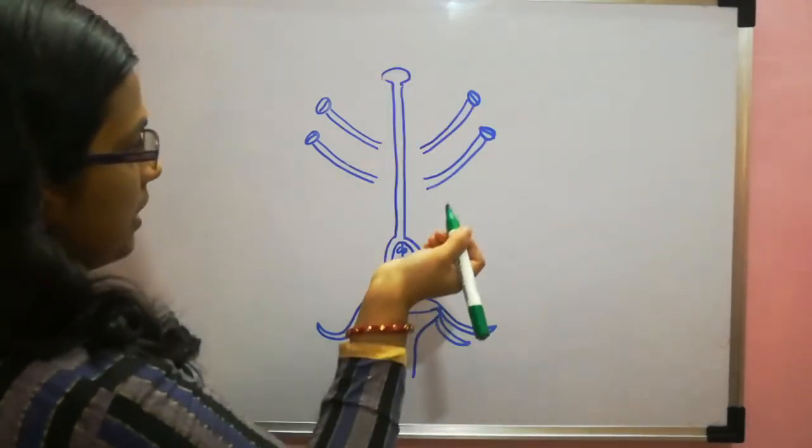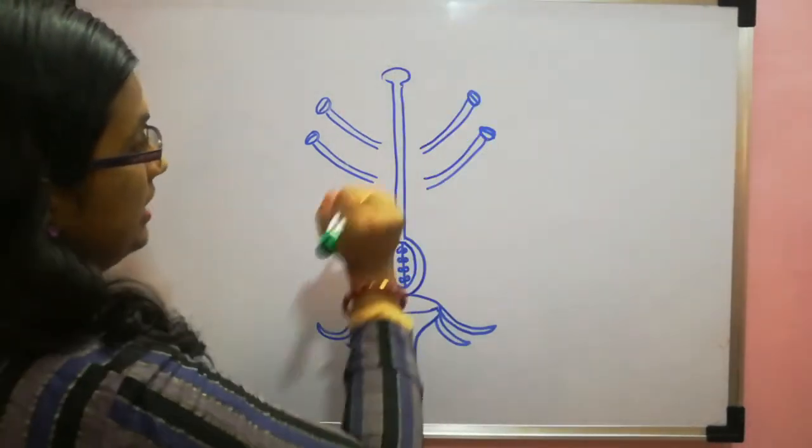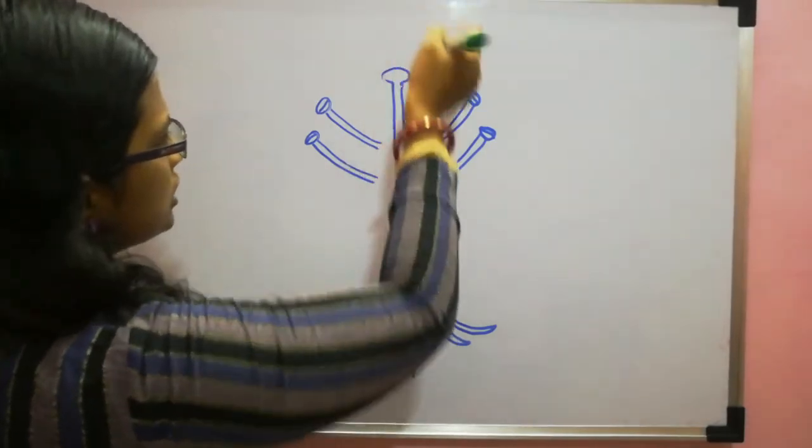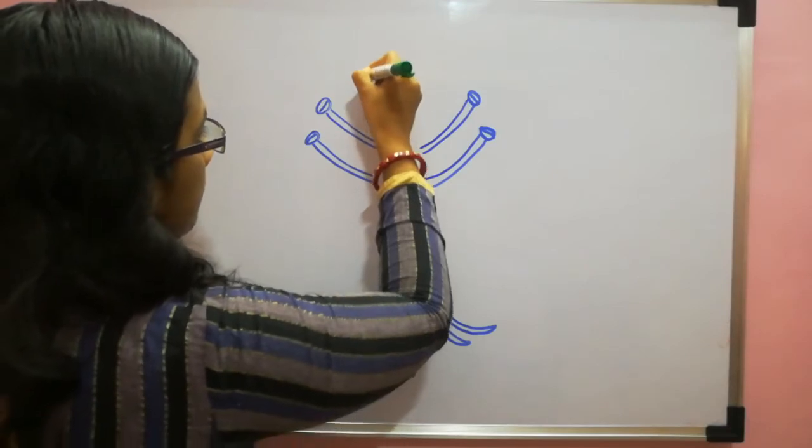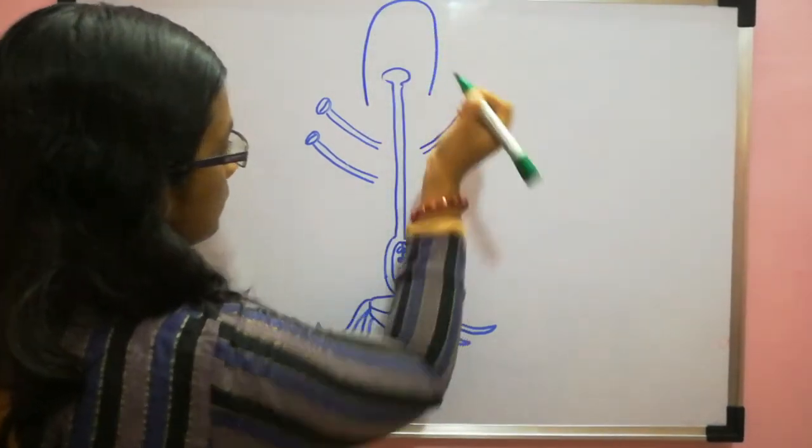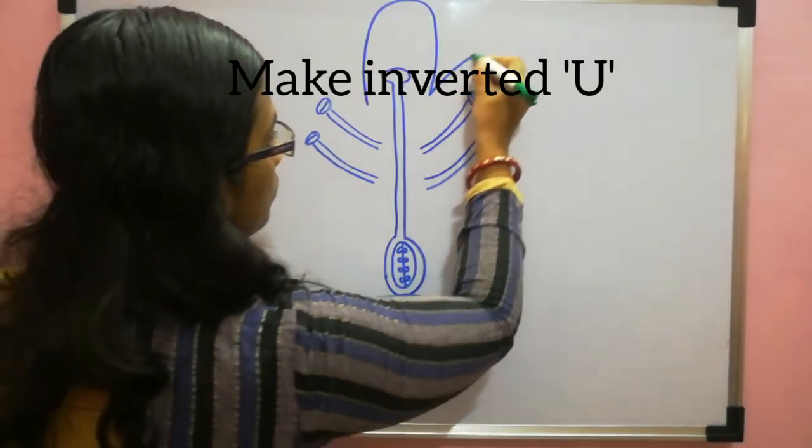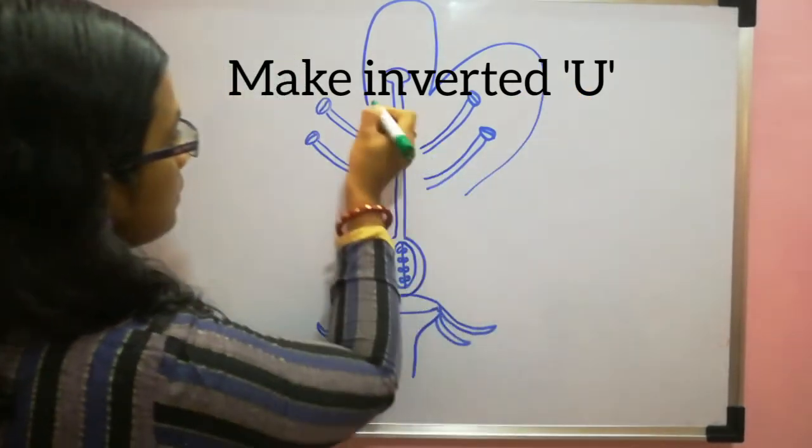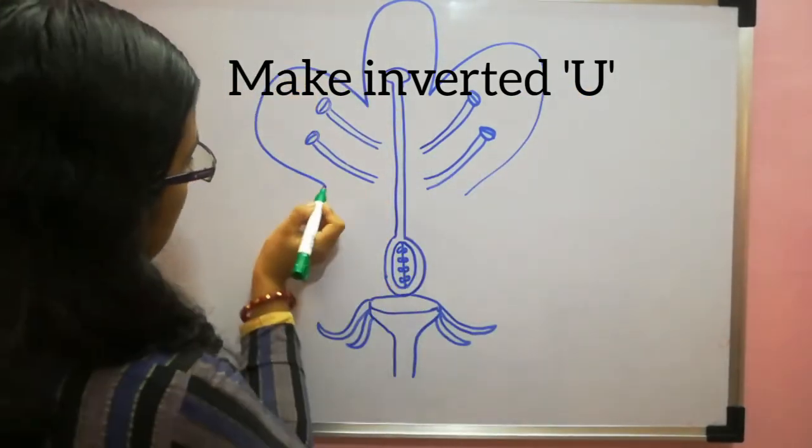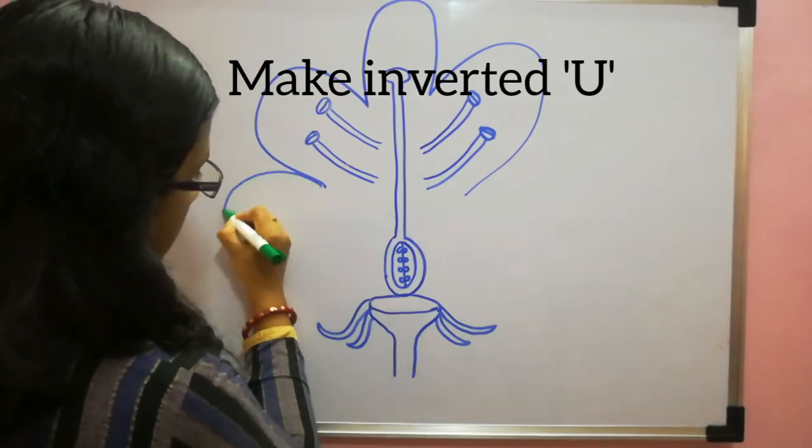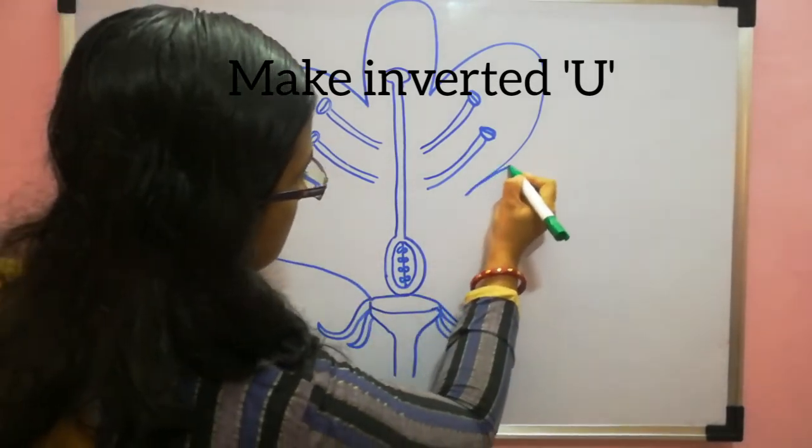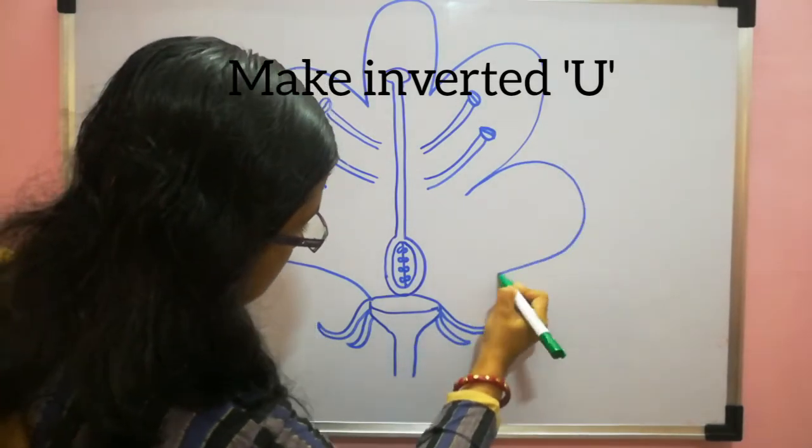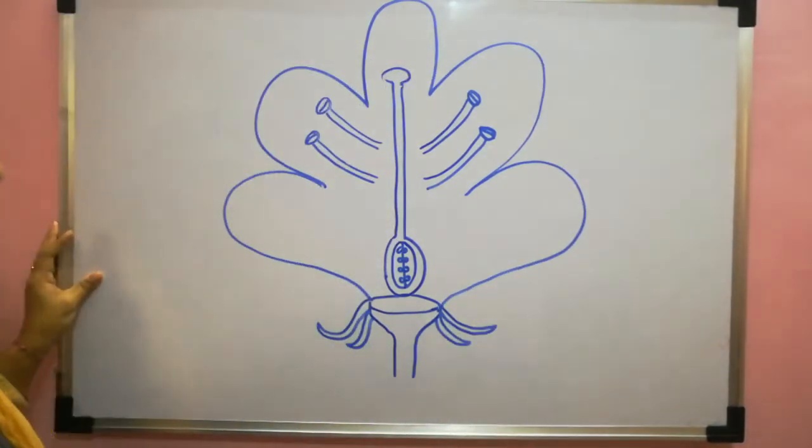Then the last part is the petals. So for petals you have to just make using inverted U's. So first start with here. Make an inverted U over here. Then over this two. Again over this two. And this. Again here. And join it this one. Again another U and join it to this part. So your complete structure of flower is ready.